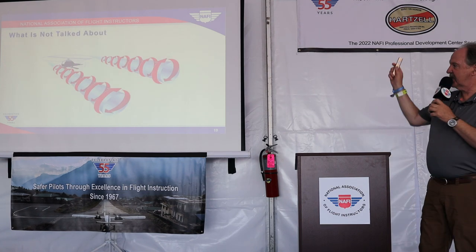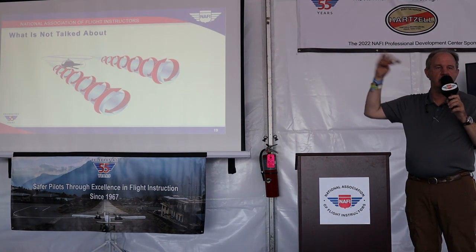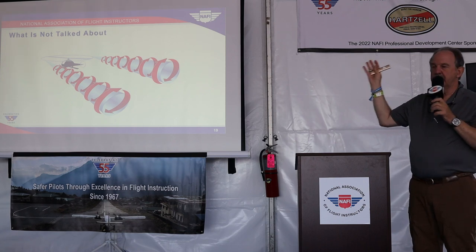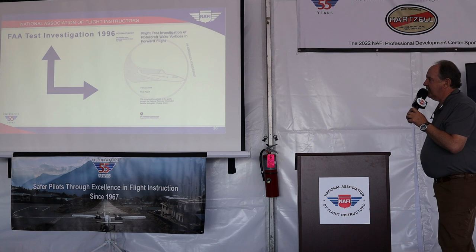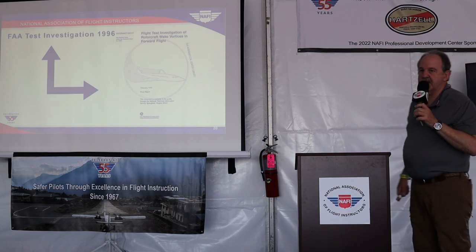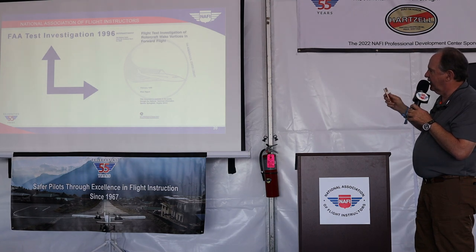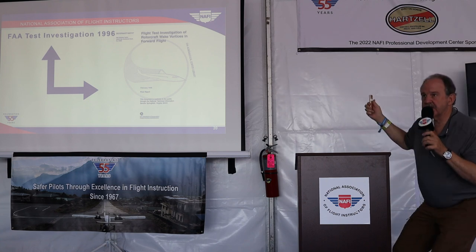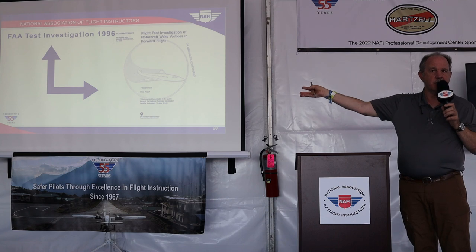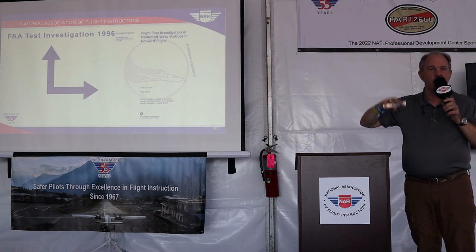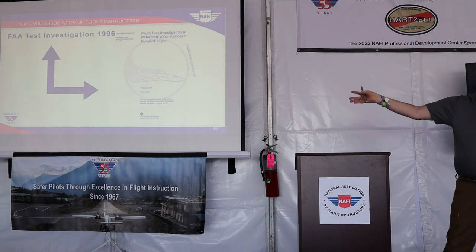Here's the part that's not talked about — what it looks like in forward flight. These vortices come back off the left and right side of the rotor disc as the aircraft is in forward flight, and I'm going to show you how violent these are. We dug up an FAA report produced in 1996 — the flight test investigation of rotorcraft wake vortices. That's why I'm trying to change it to 'wake turbulence in forward flight.' This is the only report we could find specifically for forward flight. If you know of another one, please send it to me.